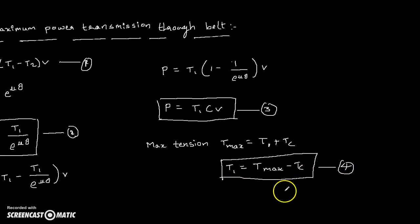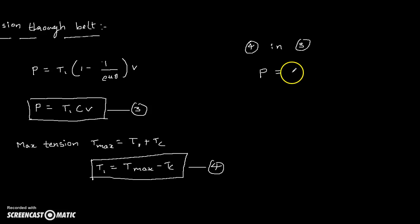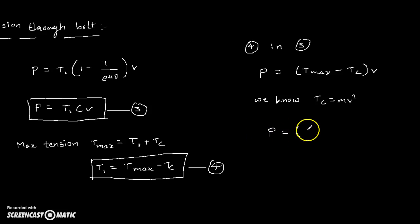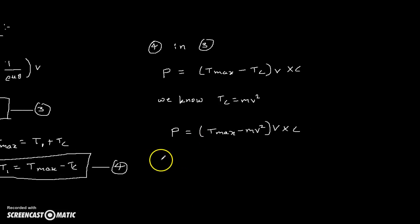Now substitute Equation 4 into Equation 3. Then Power = (T_max minus Tc) × C × velocity. We know that Tc, the centrifugal tension, equals mv², which is the standard formula. Substituting: Power = (T_max minus mv²) × v × C. This is the relation we have obtained.